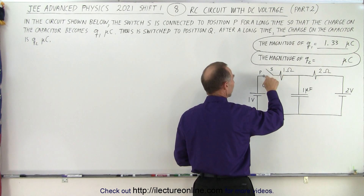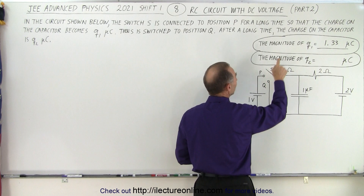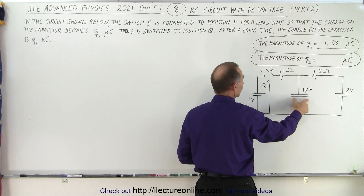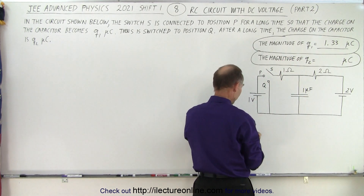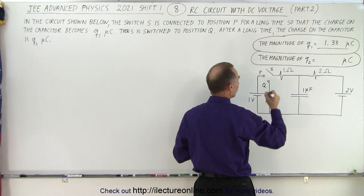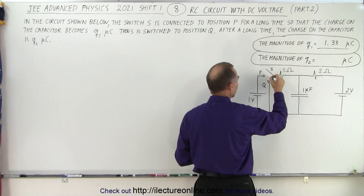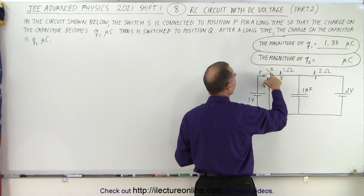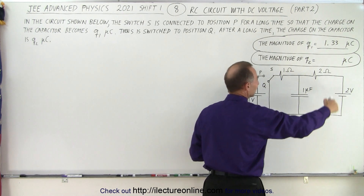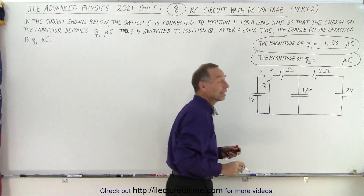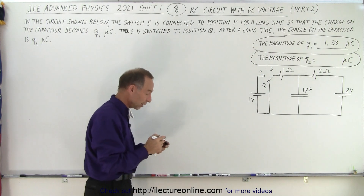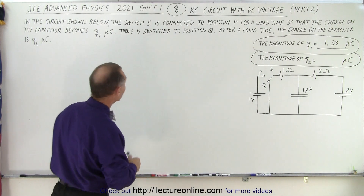Initially the switch was placed to P and we calculated Q1 on the capacitor. Now the switch is going to be connected to Q instead, and we need to find the charge on the capacitor again.